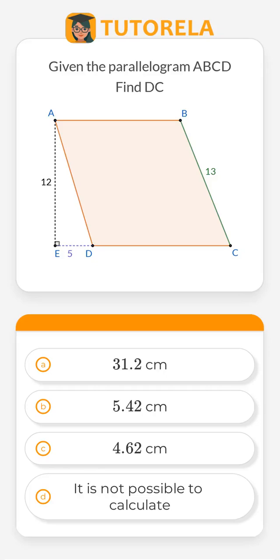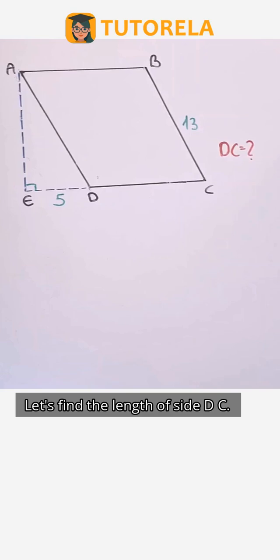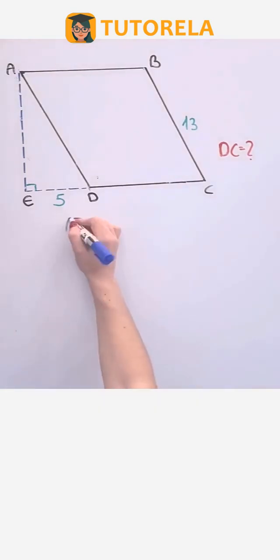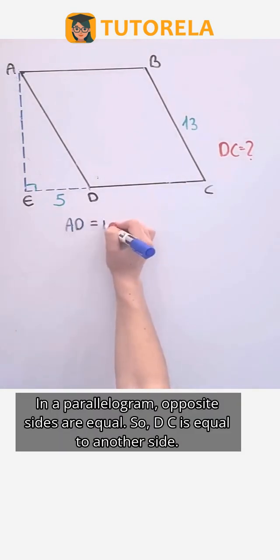Given the parallelogram ABCD, find the length of side DC. Let's find the length of side DC. In a parallelogram, opposite sides are equal, so DC is equal to another side.